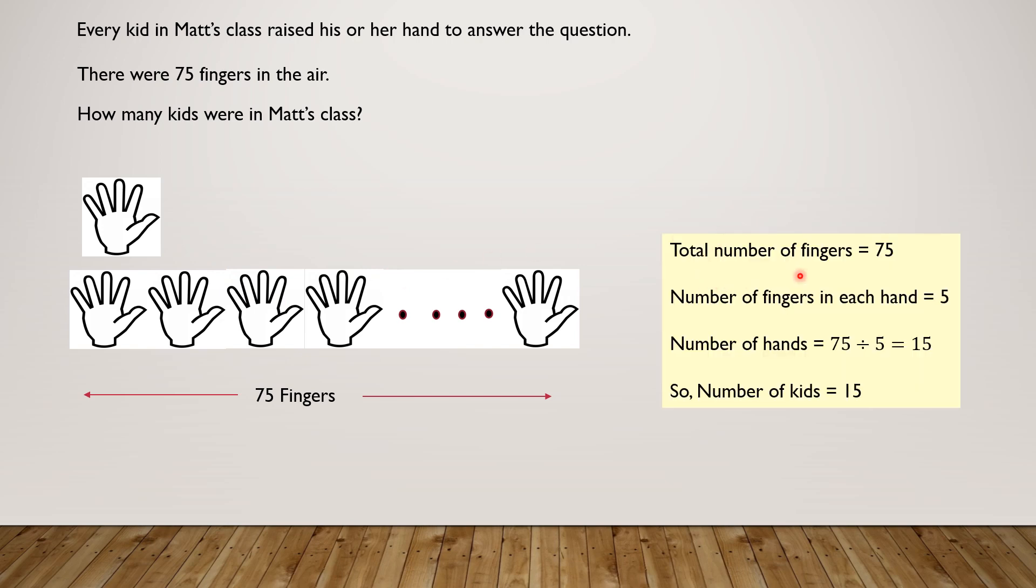So total number of fingers equals 75. Number of fingers in each hand are five. So number of hands, 75 divided by five equals 15. So number of kids equals 15.